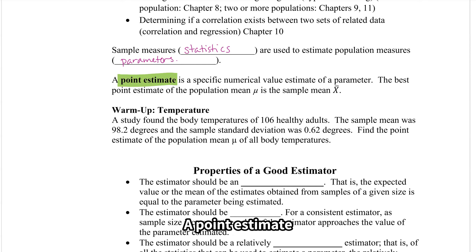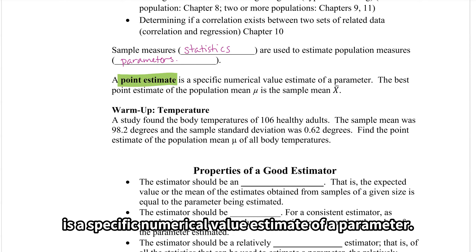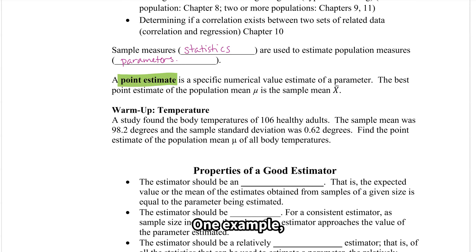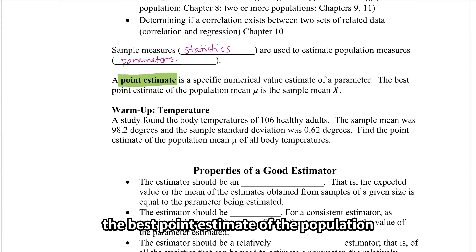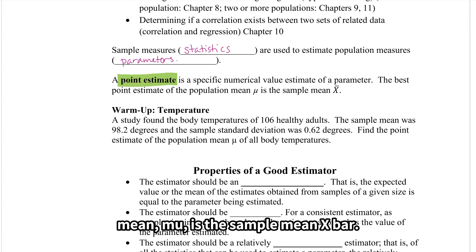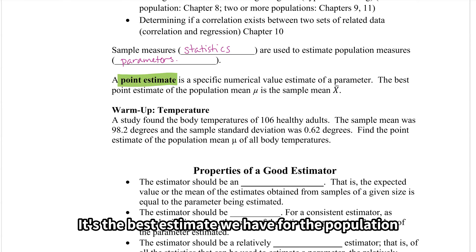A point estimate is a specific numerical value estimate of a parameter. One example: the best point estimate of the population mean, mu, is the sample mean, x-bar. It's the best estimate we have for the population mean.